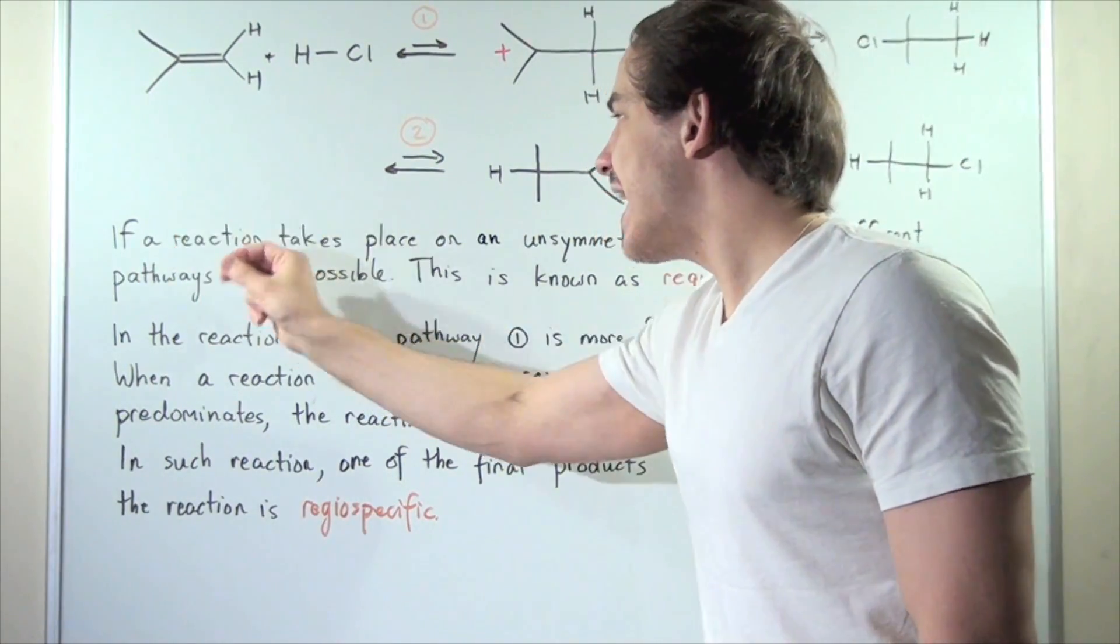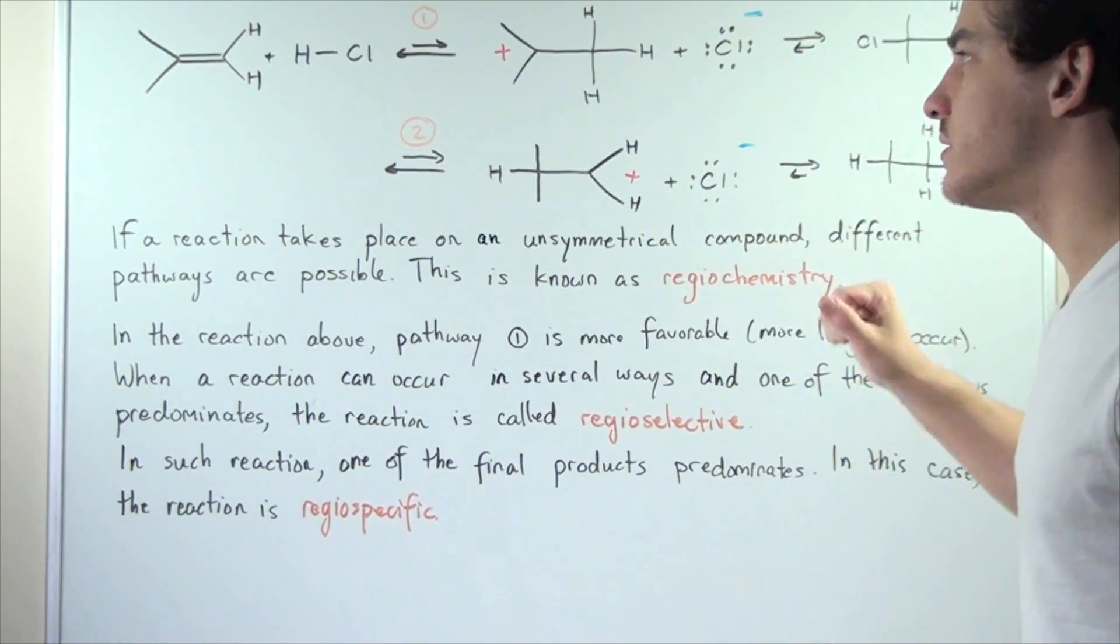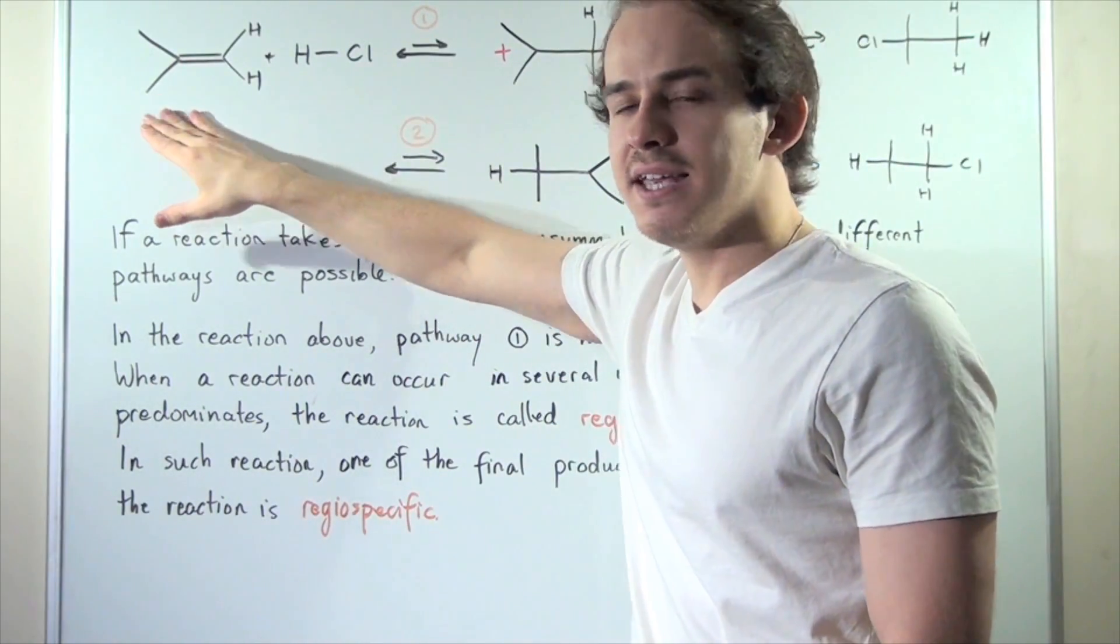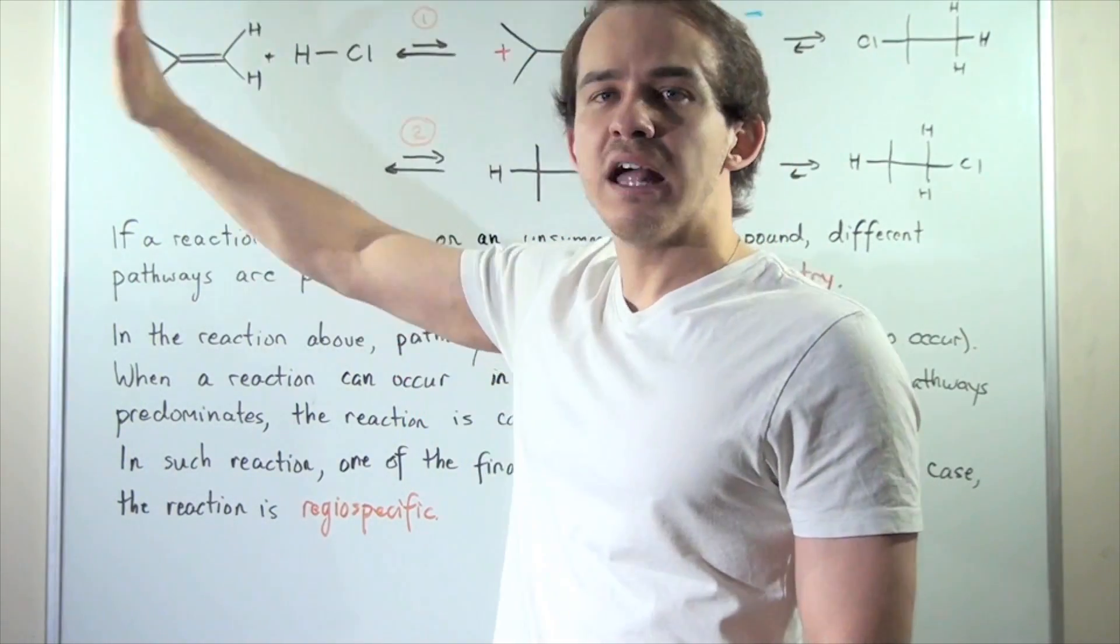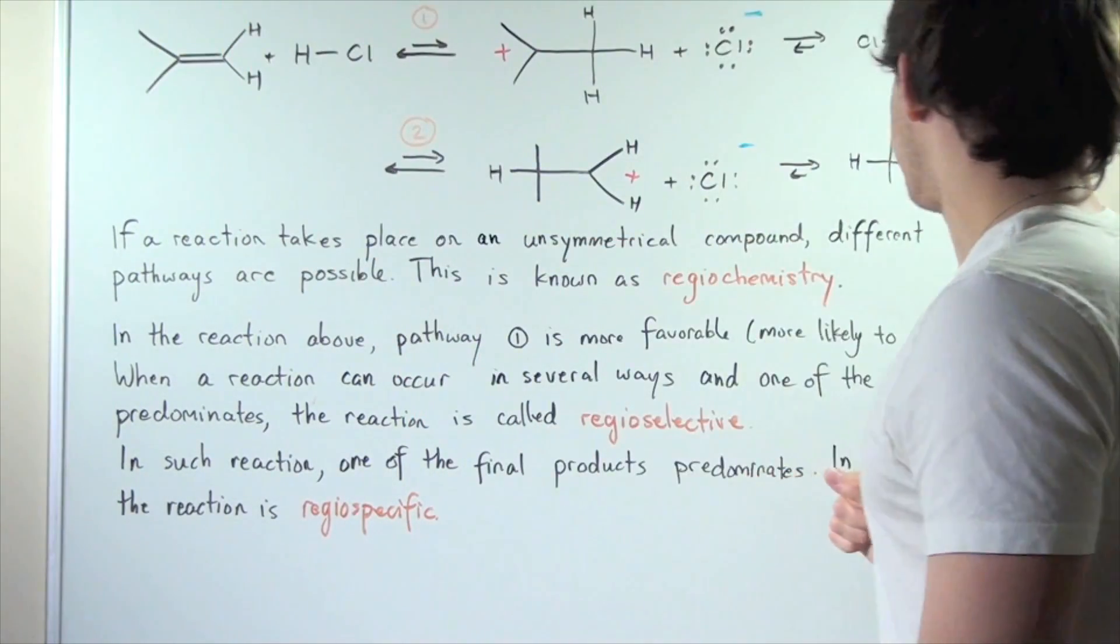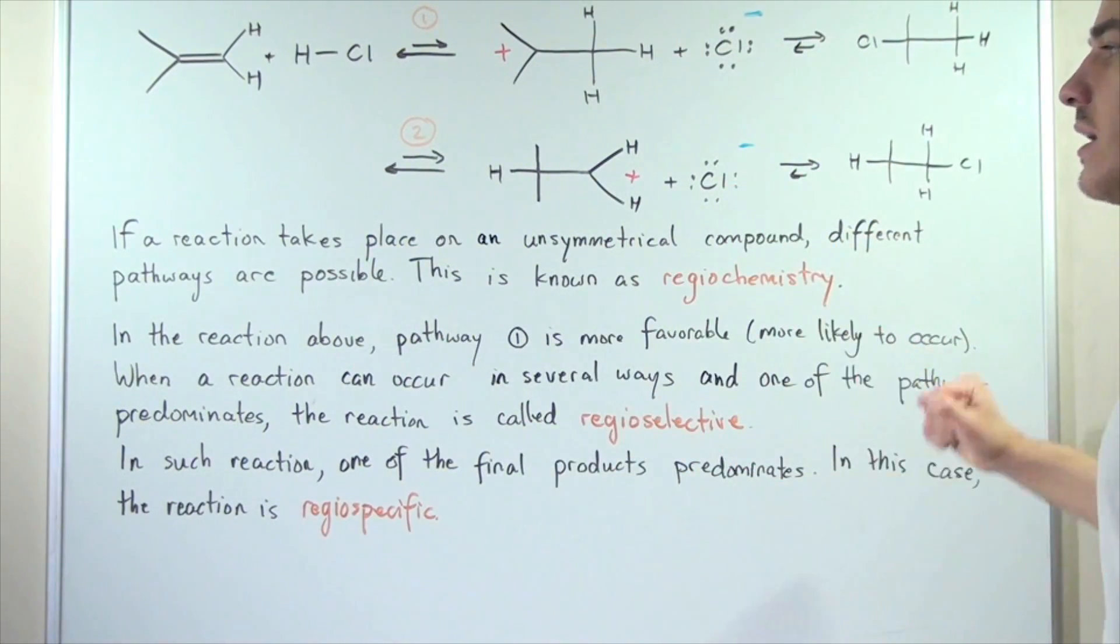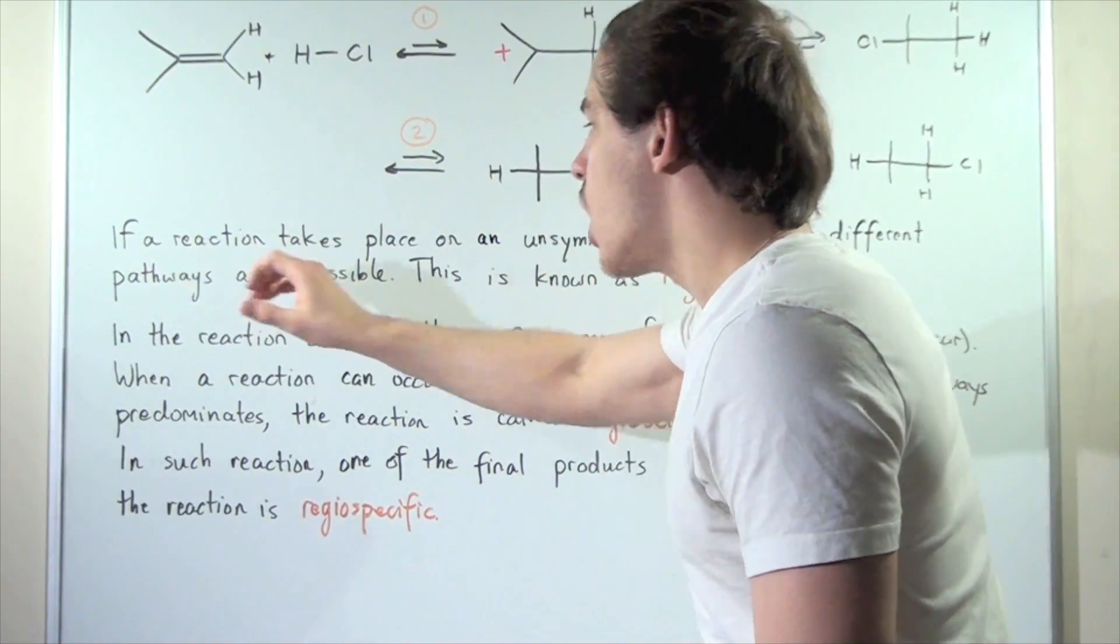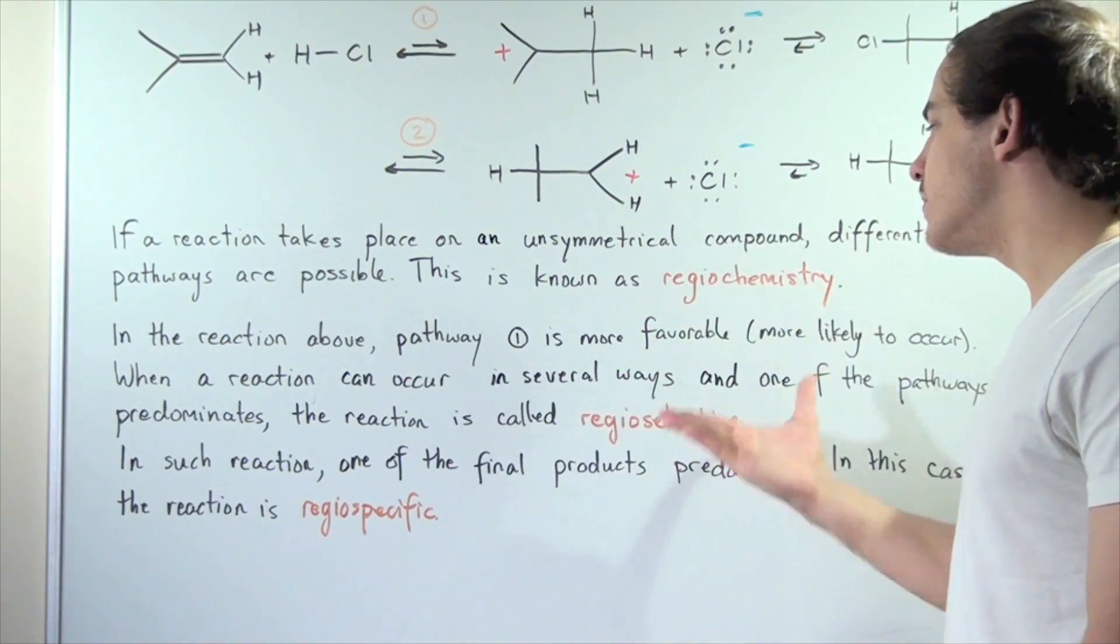If a reaction takes place on an unsymmetrical compound, such as this alkene - unsymmetrical simply means if we cut this in half, the left is different from the right - then different pathways are possible. This is known as regiochemistry.